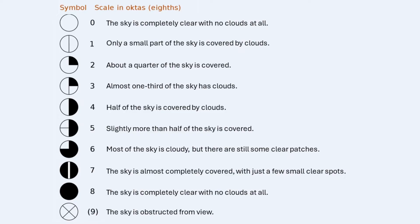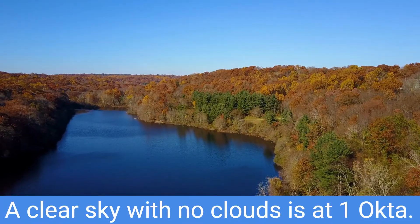At one octa, only a small part of the sky is covered by clouds. At two octas, about a quarter of the sky is covered. With three octas, almost one-third has clouds. At four octas, half the sky is covered. With five octas, slightly more than half is covered. At six octas, most of the sky is cloudy but there are still some clear patches. At seven octas, the sky is almost completely covered with just a few small clear spots.